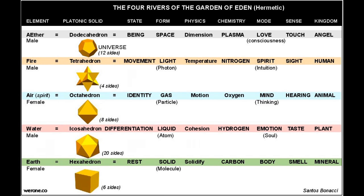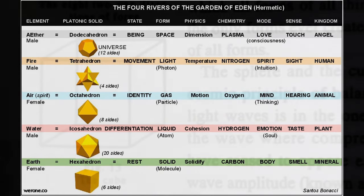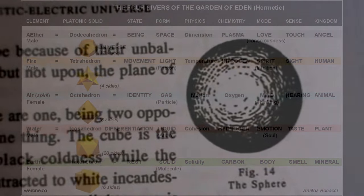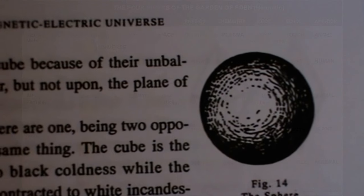Sodium iodine or sodium bromide are not crystallized in true cube because of their unbalanced positions near, but not upon, the plane of wave amplitude.